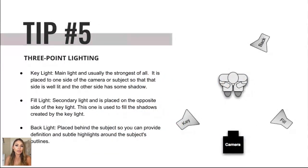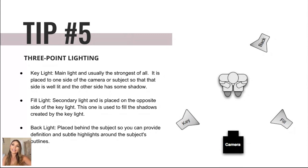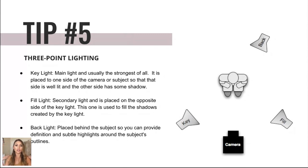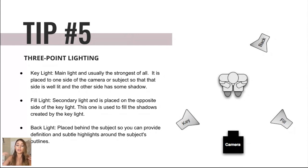The key light is the main and strongest light — you place it on one side of the camera or subject so that side is well lit without overexposing. The fill light is secondary, used to fill in the harsh shadows created by the key light. The backlight is placed behind you and is great for defining your hair and shoulders, separating you from the background — especially important for blurry background shots or when you have a dark shirt against a dark background.